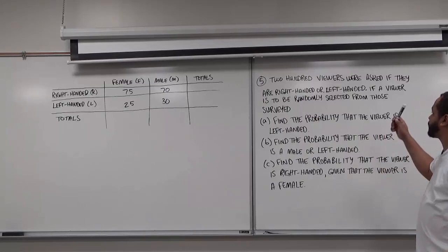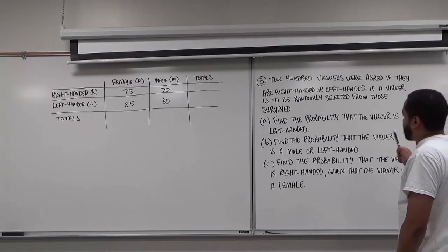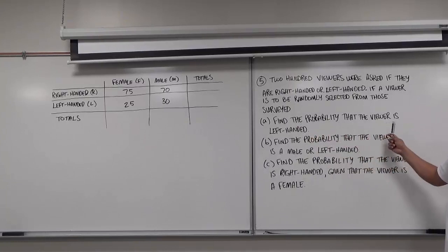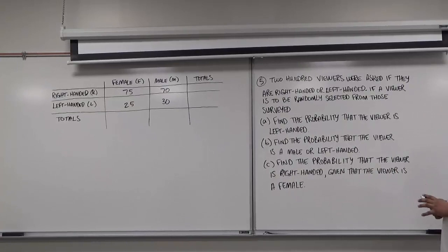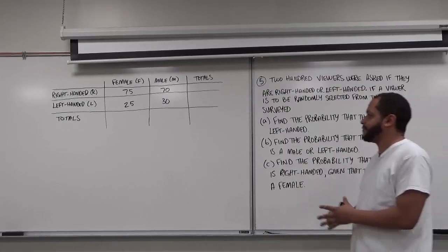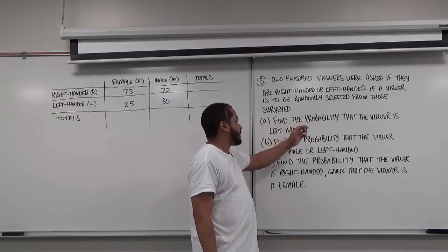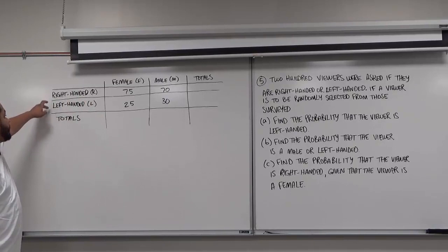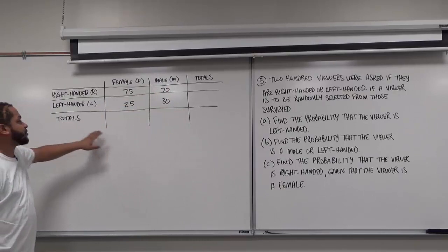200 viewers were asked if they are right-handed or left-handed. If a viewer is to be randomly selected from those surveyed, we need to solve three problems. The first is find the probability that the viewer is left-handed. Part B says find the probability that the viewer is male or left-handed. And part C says find the probability that the viewer is right-handed given that the viewer is female. The table shows right-handed and left-handed people, as well as female and male people, with a totals column and row for each.